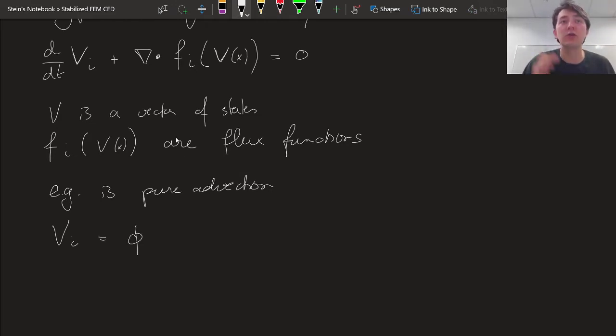a certain scalar. It's not a vector state, just one state, phi. And the flux function f of V at x is in this case simply f of phi, which equals a phi, where a is our advective field.